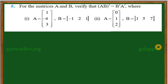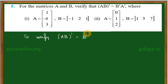For the matrices A and B, verify that (AB) whole transpose is equal to B transpose into A transpose. A is equal to the matrix [1, -4, 3] and B is equal to the matrix [-1, 2, 1] as the first sub-question, and the second sub-question has A equal to [0, 1, 2] and B equal to [1, 5, 7]. In both cases we need to verify that AB whole transpose is equal to B transpose into A transpose.